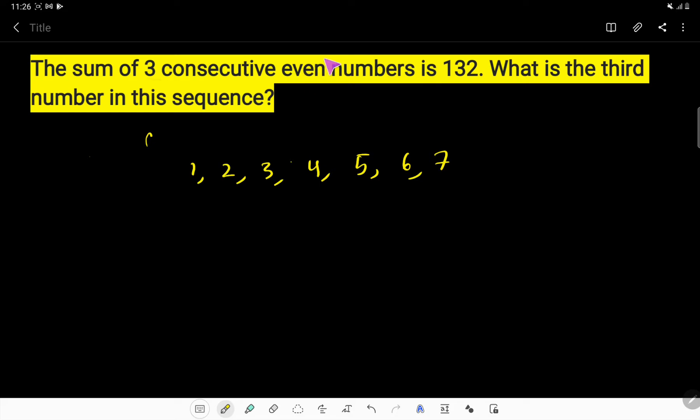Then we have even number, right? Consecutive even number. Look, here two, four, six. These two is exactly divisible by two. But these three is not exactly divisible by two. Because if you divide three by two, you will get remainder one.